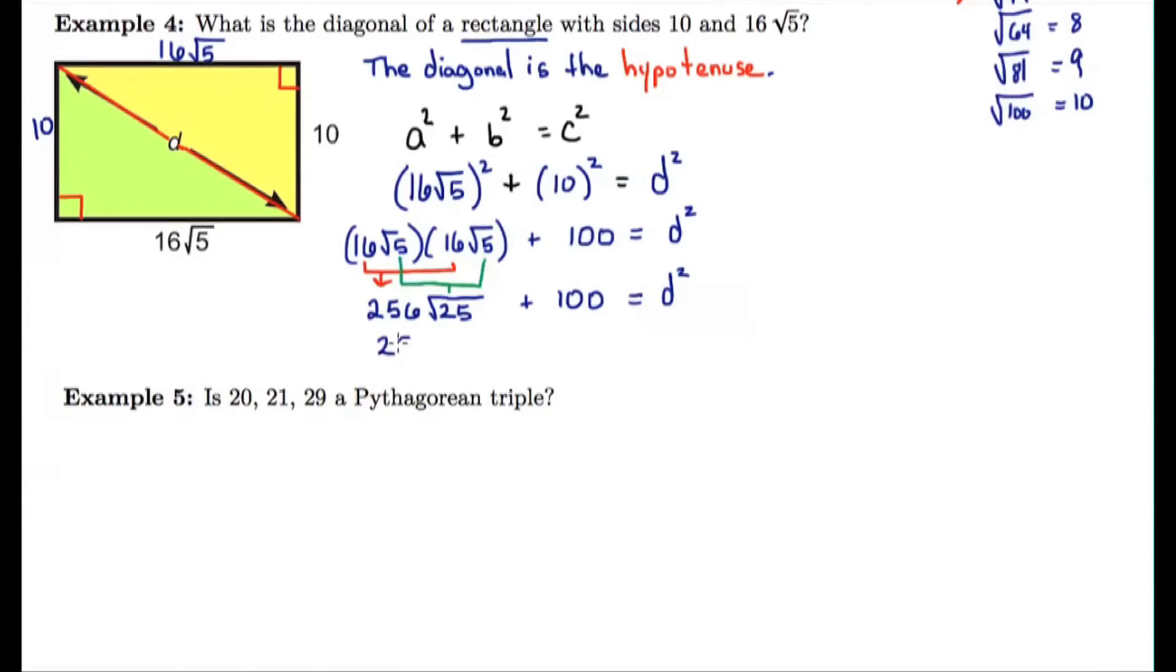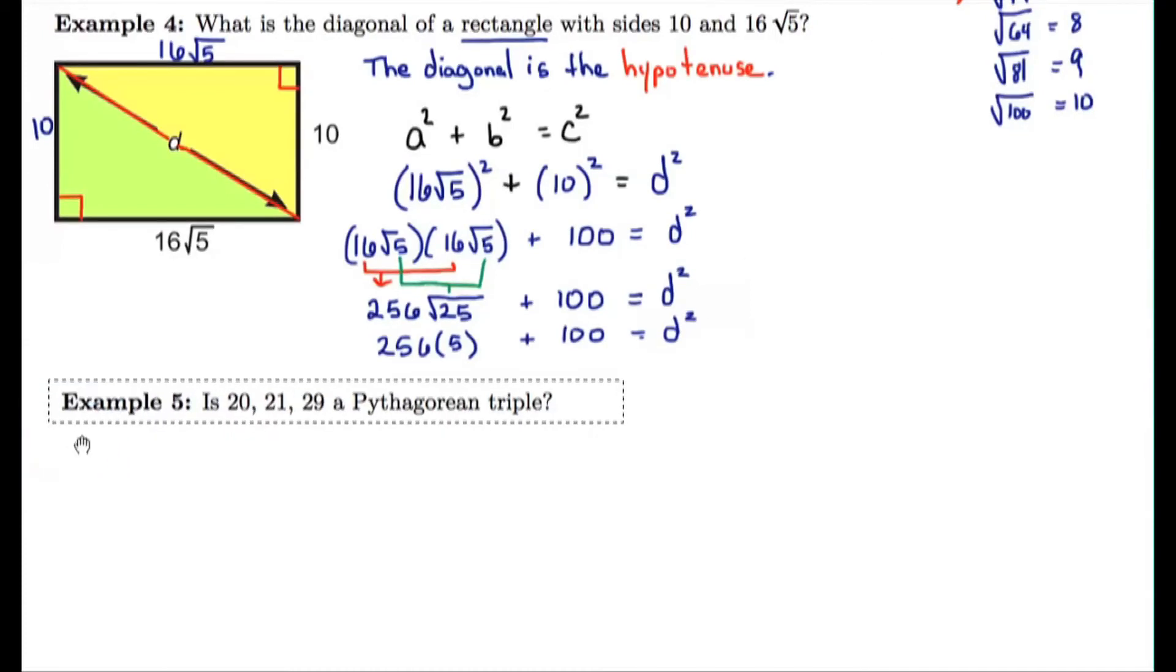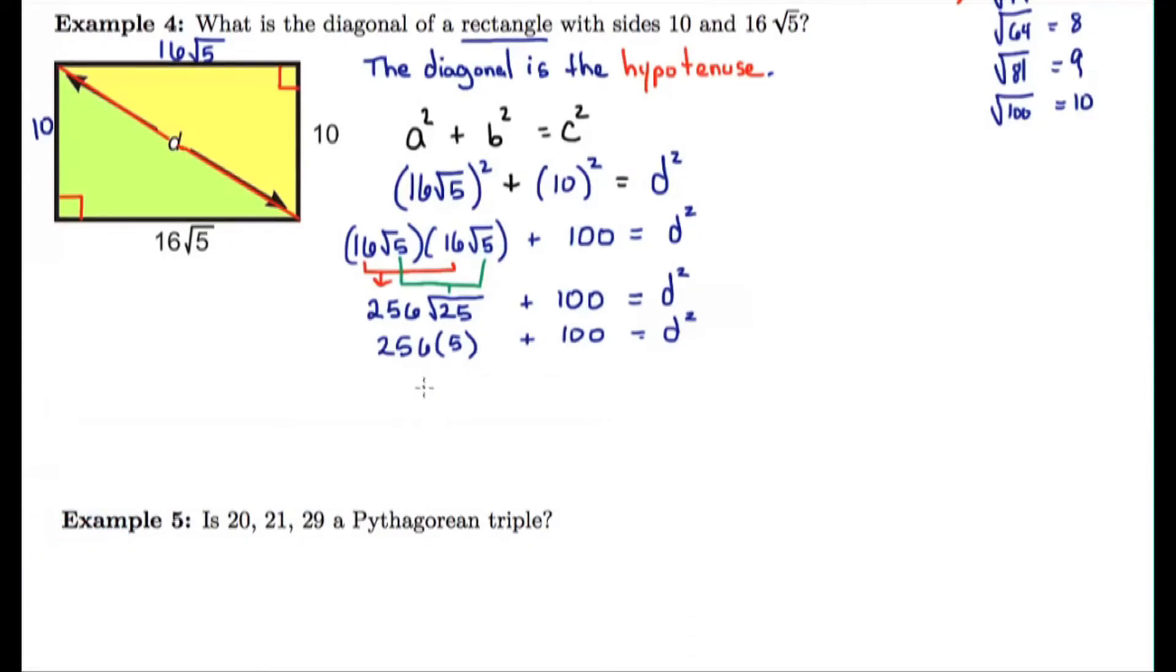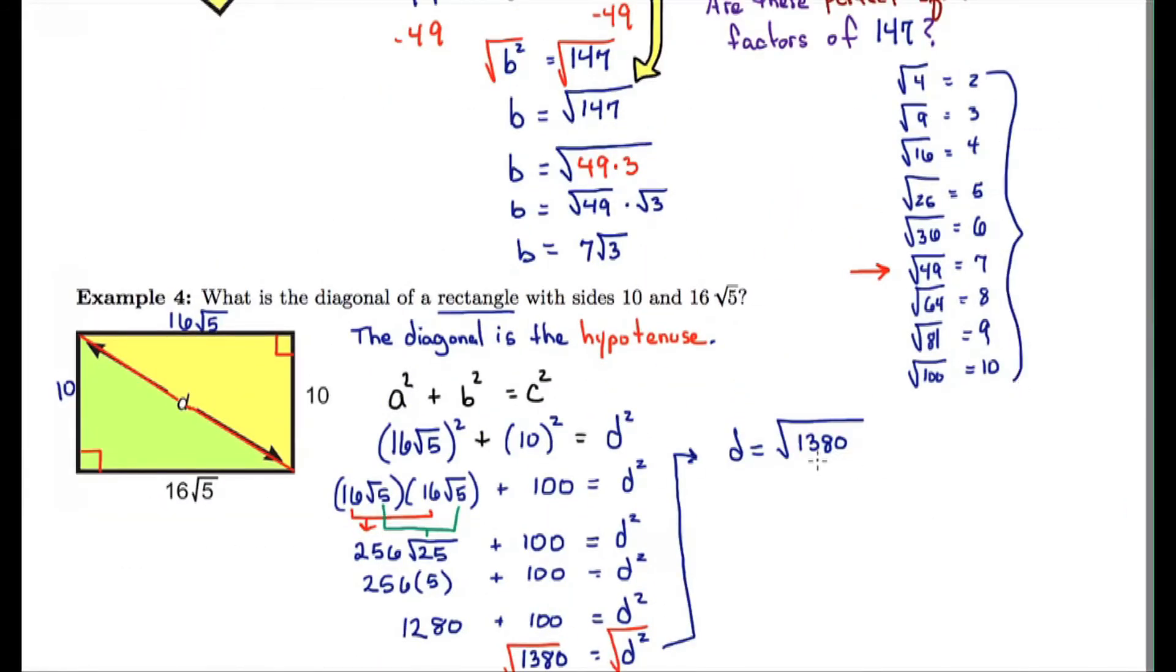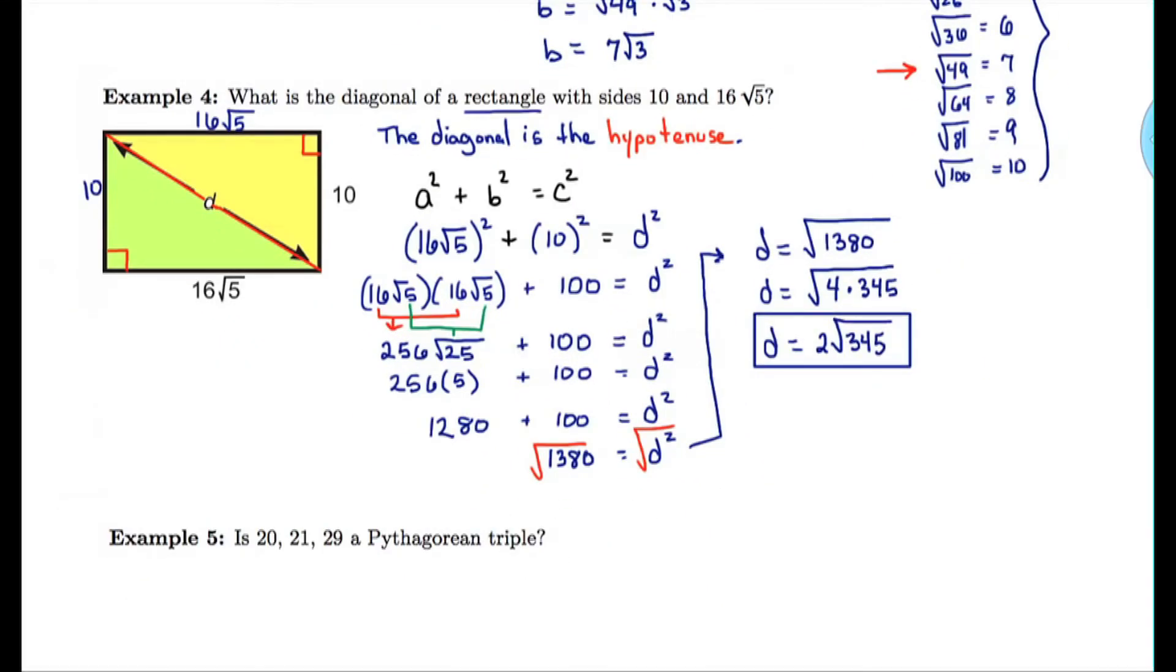So this would be 256 times 5 plus 100 equals D squared. Let's make a little room here. So now multiply 256 times 5 and add 100, which is 1380. And now we have to take the square root of 1380. So, again, I have to simplify this in radical form. So I'm just going to test to see which of these may work, and I can get a calculator and try different numbers. 4 ends up being a factor of 1380. 4 times 345 is 1380. And the square root of 4 is 2. So our answer simplifies to 2 root 345.